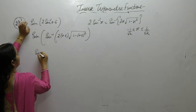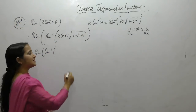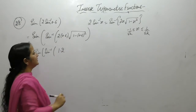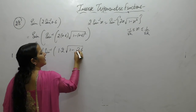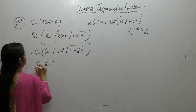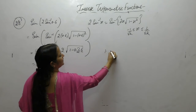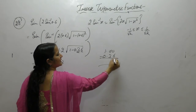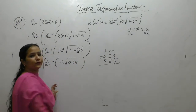Apply the formula for 2sin⁻¹x = sin⁻¹(2x√(1-x²)). So we get sin(sin⁻¹(...)); 6×2 is 12, so 1.2. Then 1 minus 6² is 36, so 1 minus 0.36 gives 0.64.